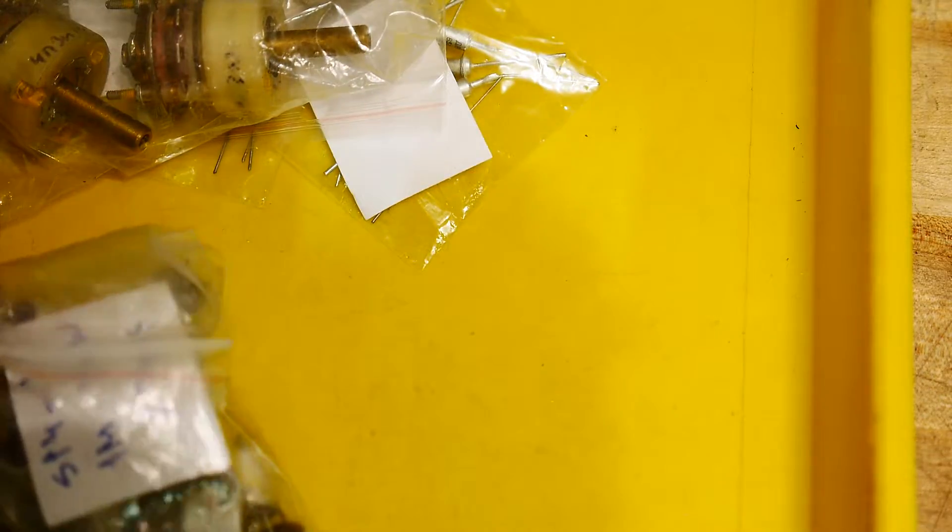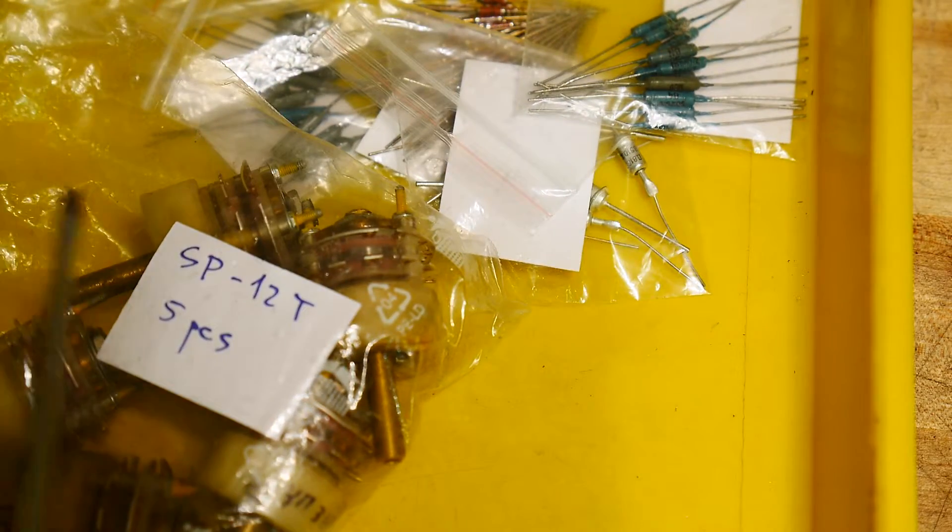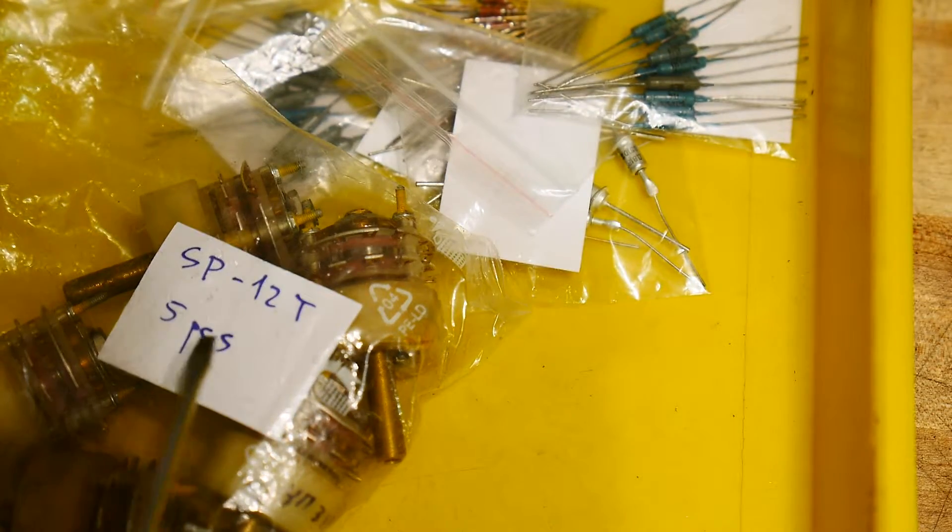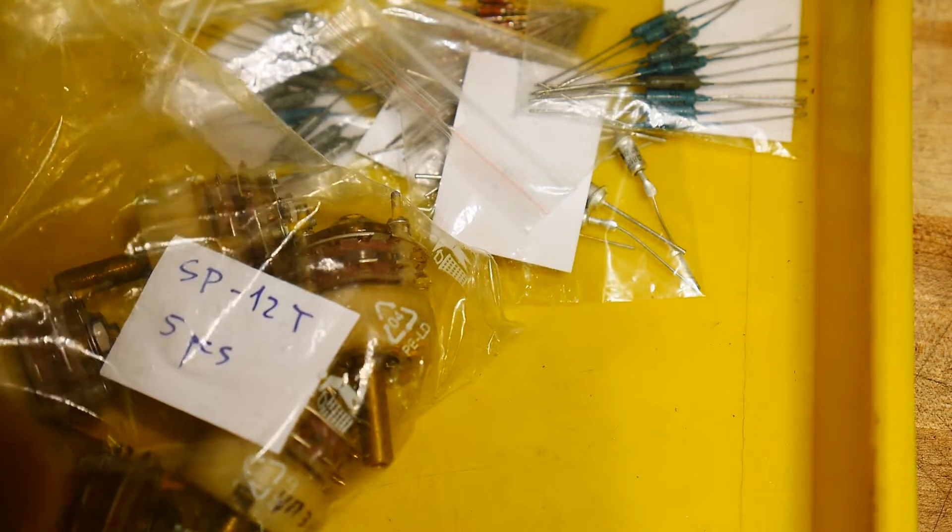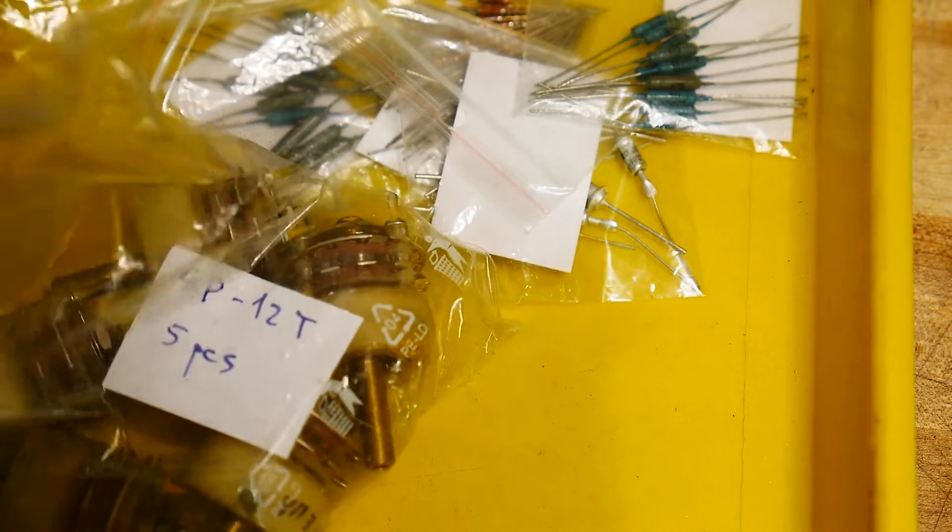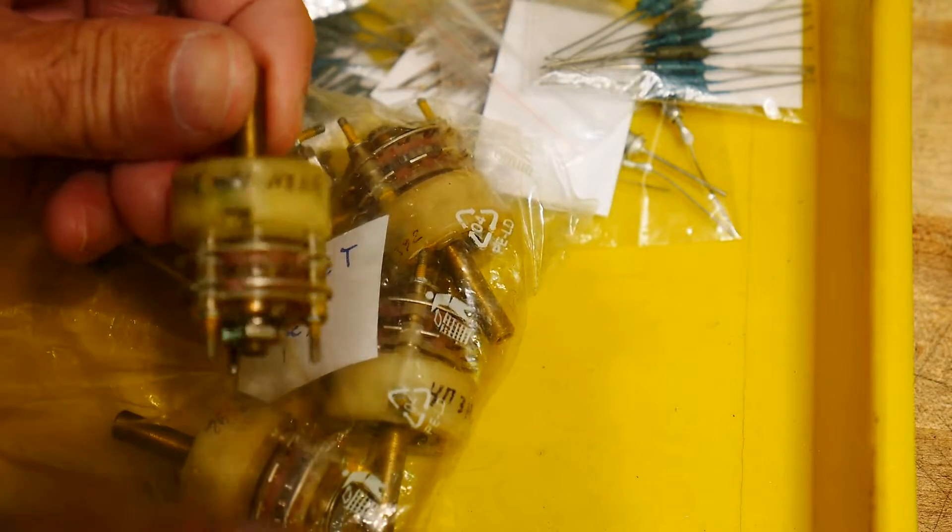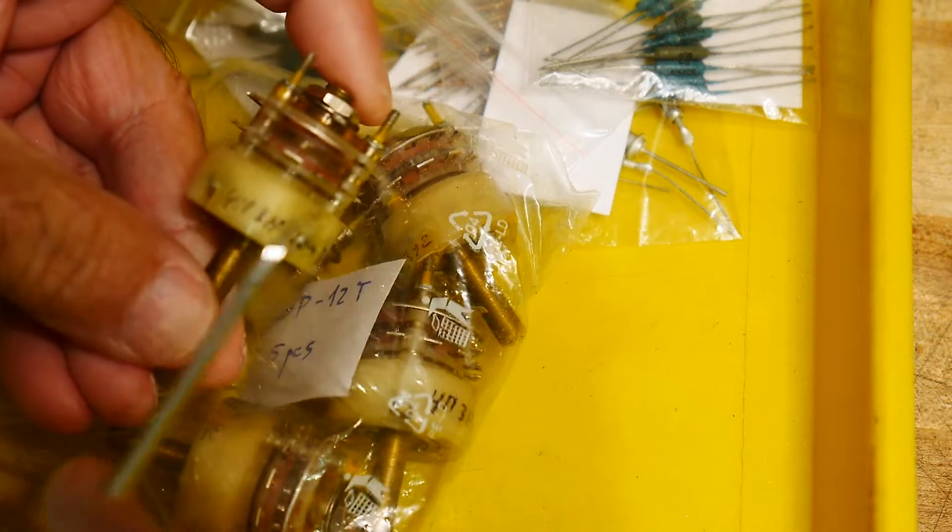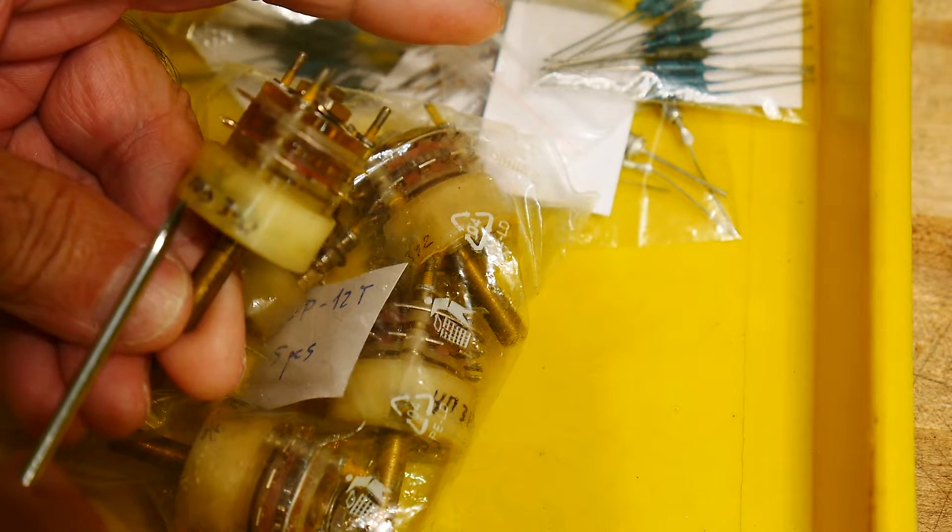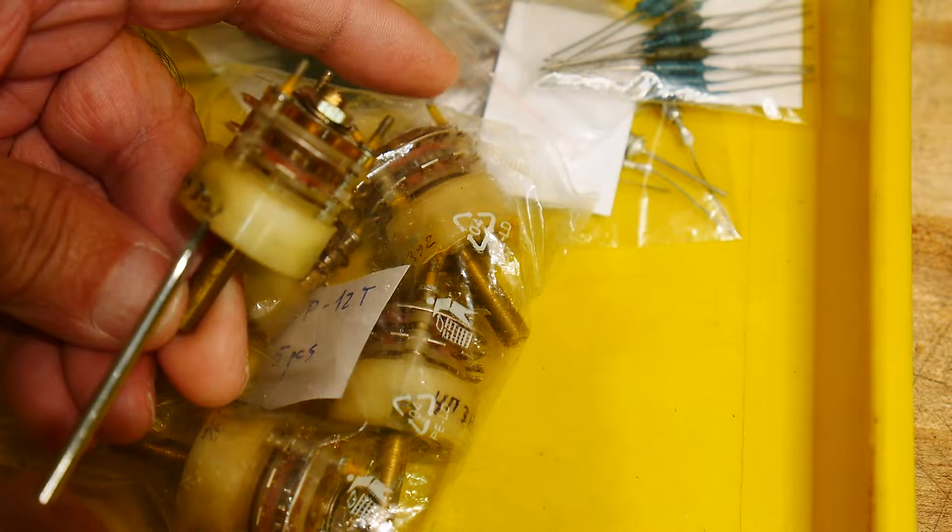Here's some big things, take a look at those. These are single pole 12-throw switches, again they look military grade. Let's pull one of those out. They have handwriting on them, it's just super cool.